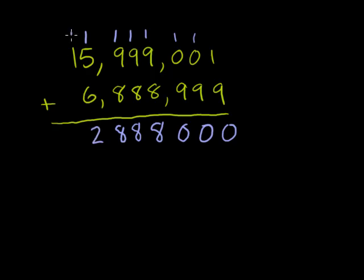10 million plus 10 million, right? This is one 10 million plus another one 10 million, right? That's 1 plus 1 is 2. And then we are done. 15,999,001 plus 6,888,999 is 22,888,000.